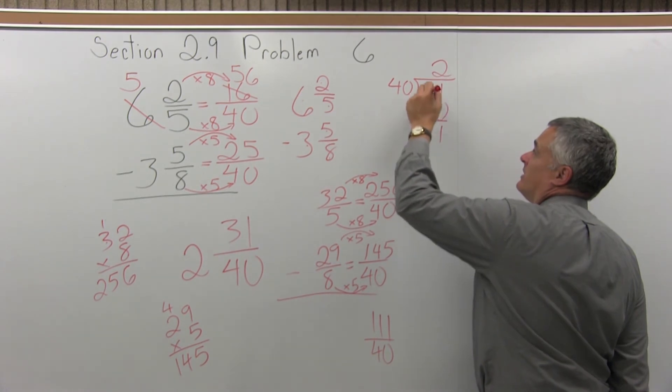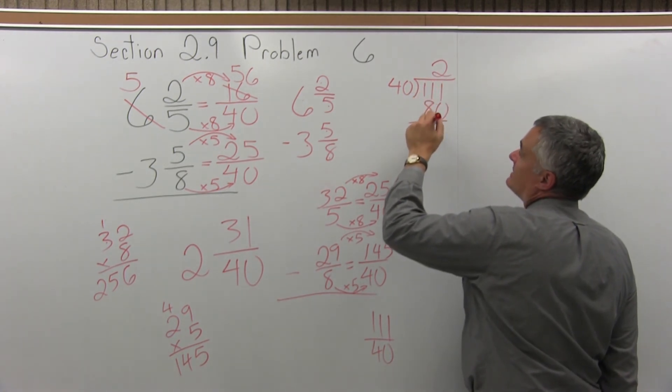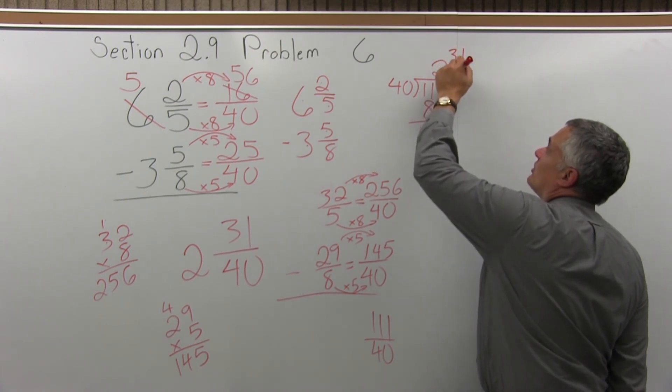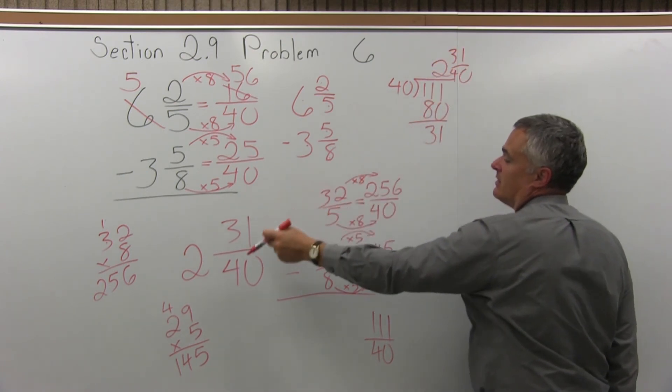1 minus 0 is 1, 11 minus 8 is 3. So it's 2 and 31 over 40. Oh, same answer, and we got it without borrowing.